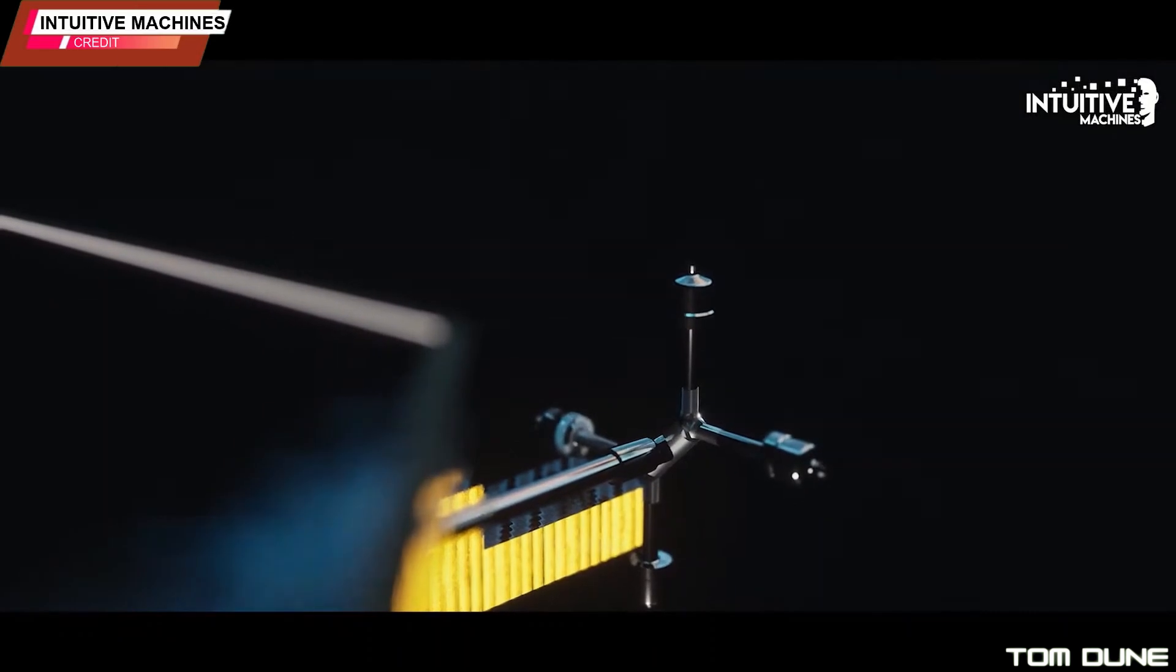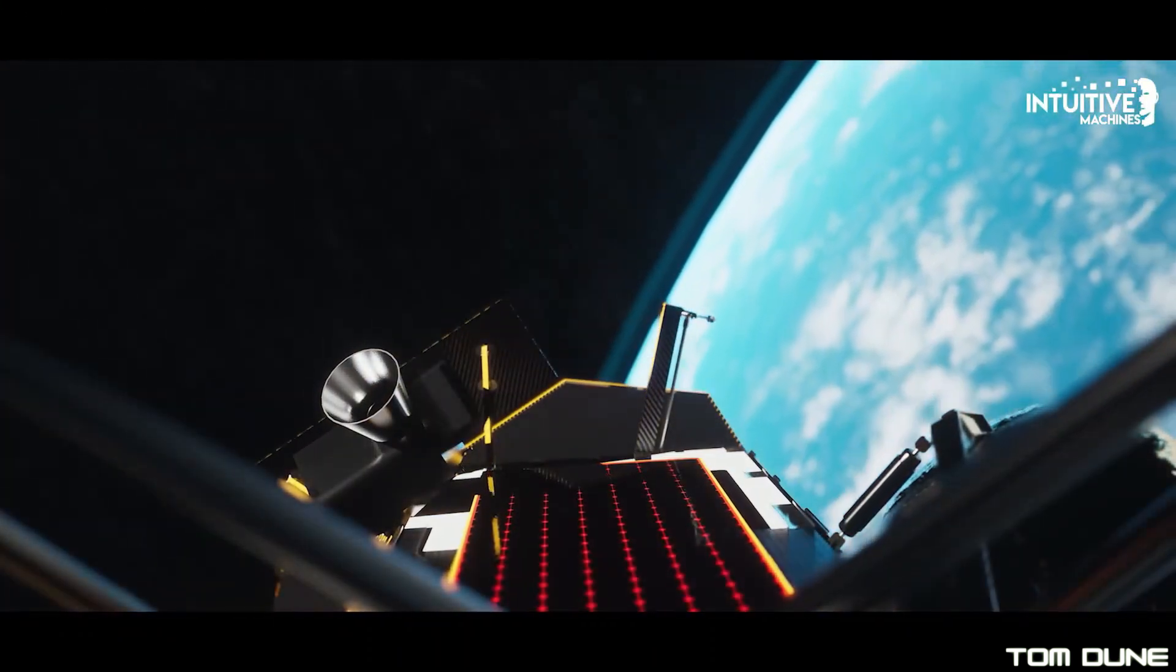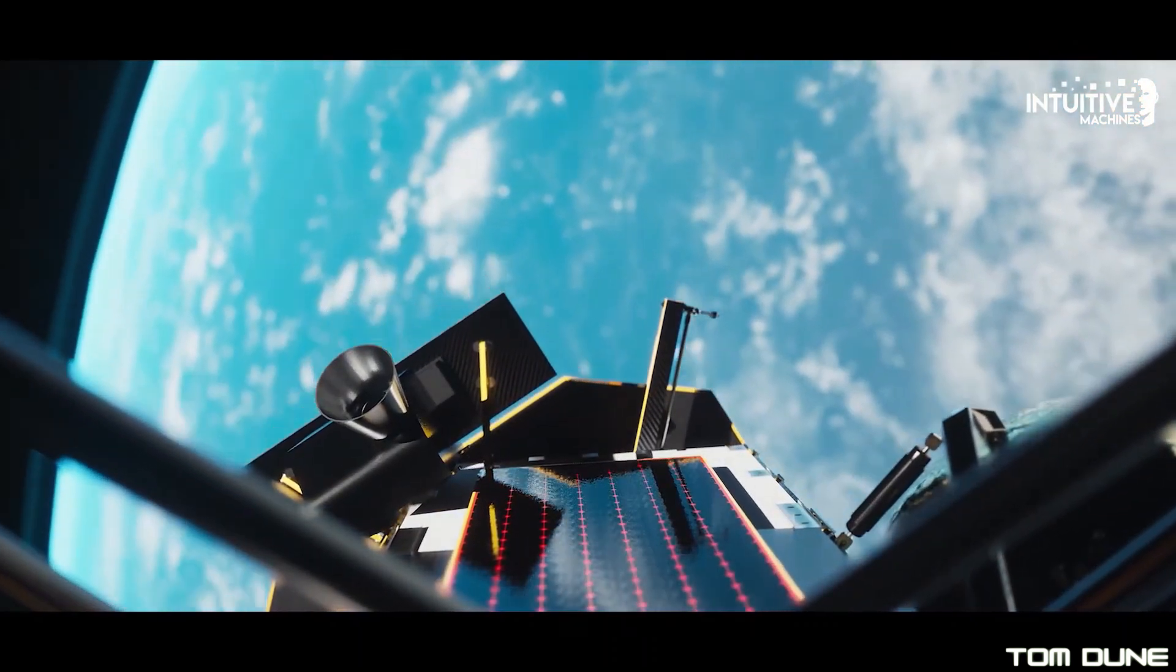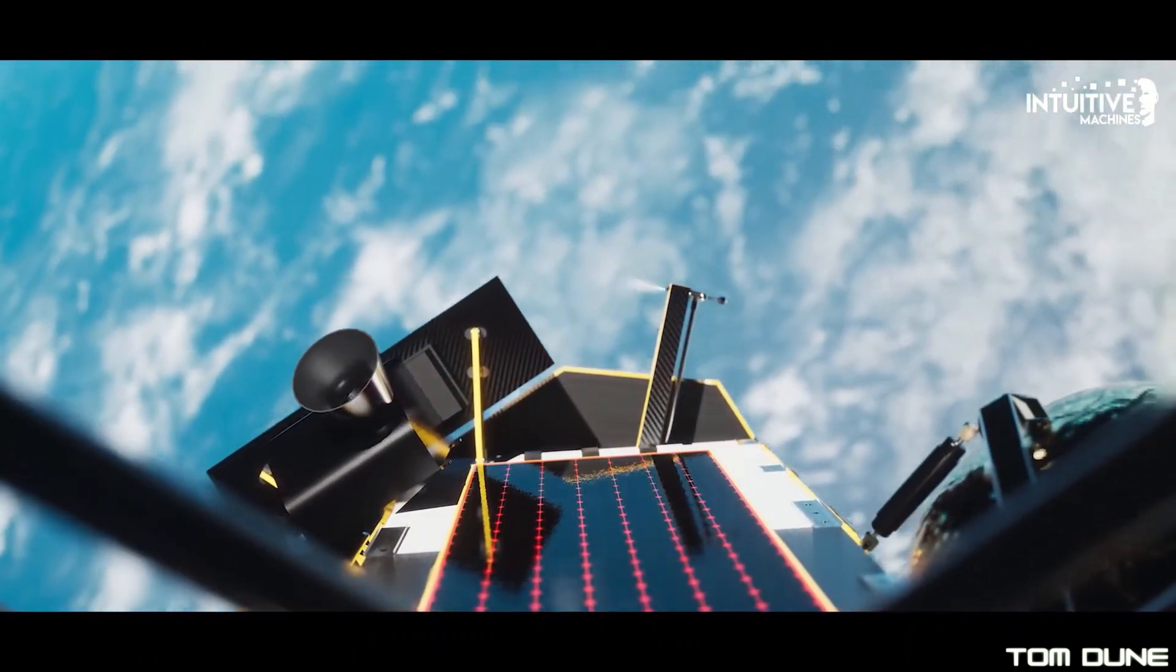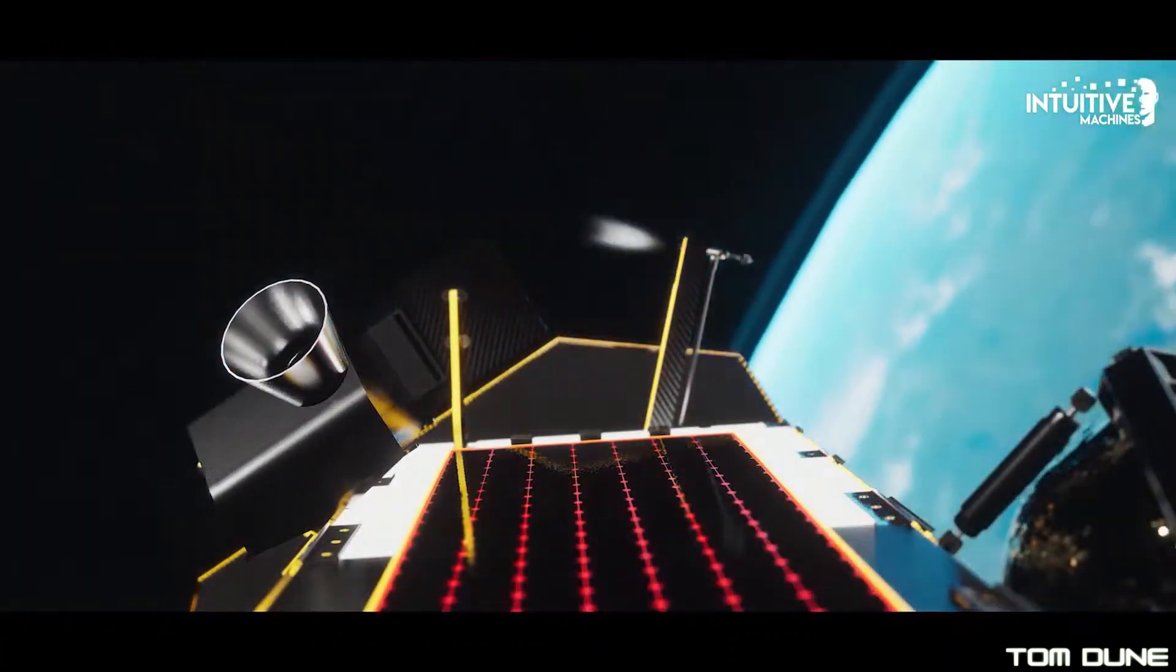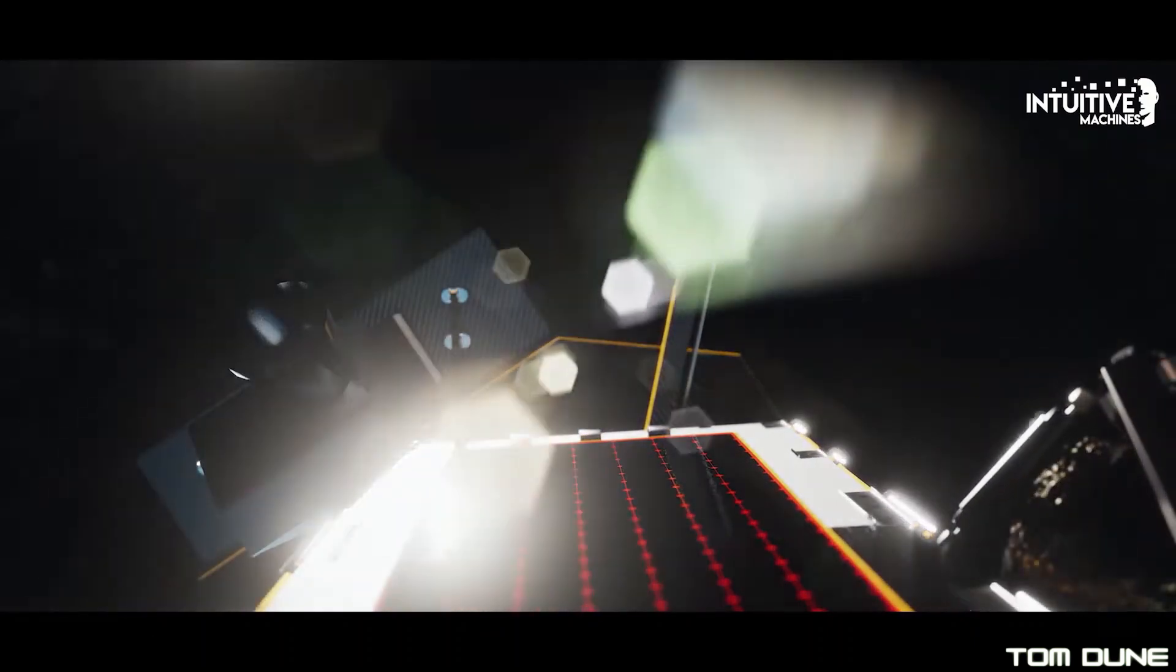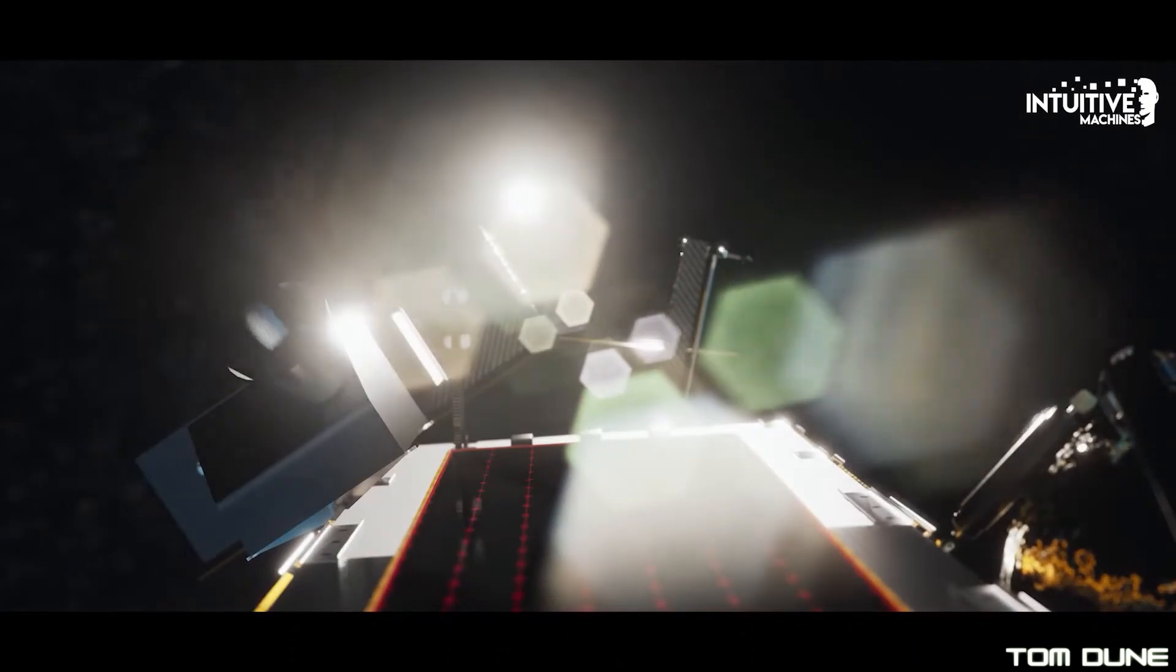Intuitive Machines are attempting the third lunar landing of the year, and it's not even March yet. Of course, we've already had Japan's Slim make it to the lunar surface, albeit with a faceplant instead of a belly flop, and Astrobotic's Peregrine-1 suffered a fuel leak which prevented it landing altogether, though the science payloads on that spacecraft all performed well and returned scientific data, including that Open University-designed ion trap mass spectrometer.